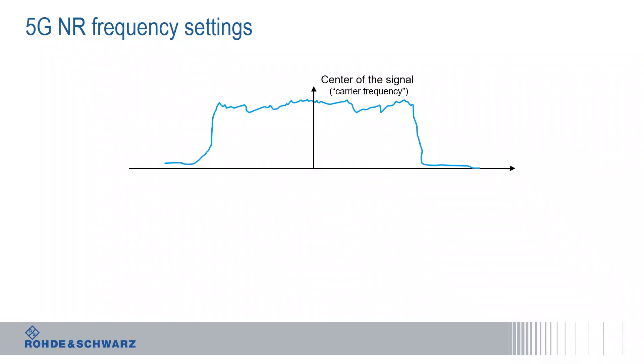What you basically see here is an example of a signal. Let's assume we have a certain bandwidth, let's say 100 MHz. In LTE we basically had the situation that around the carrier frequency, the synchronization signals PSS and SSS were transmitted, and the broadcast channel was transmitted. So as soon as we knew the actual carrier frequency of the LTE signal, we could find these signal components, identify the cell ID, and find the Master Information Block.